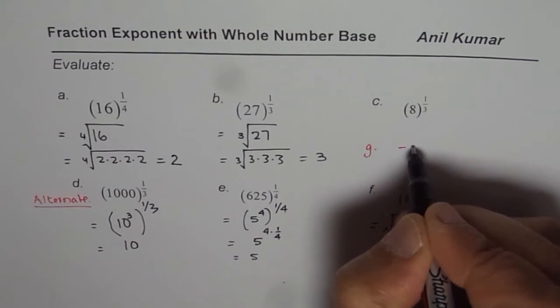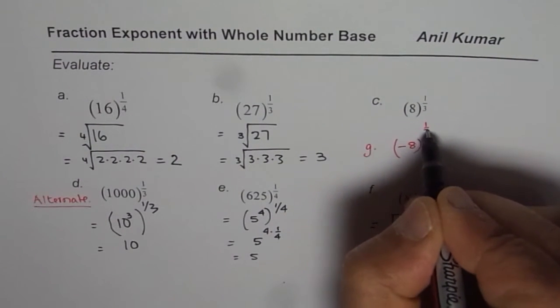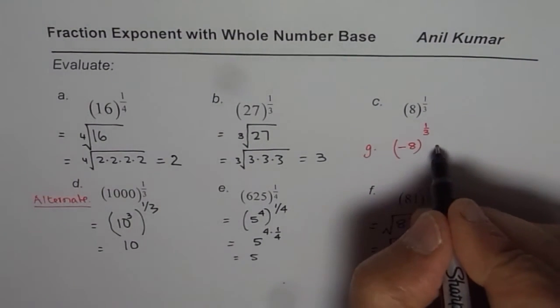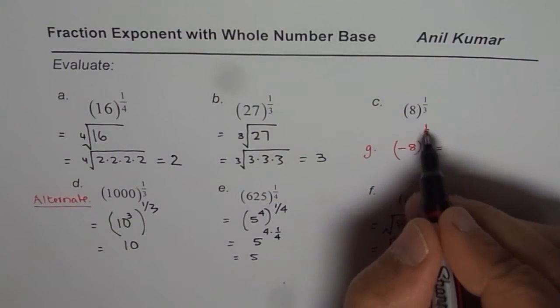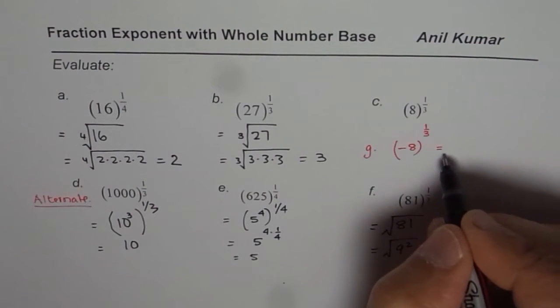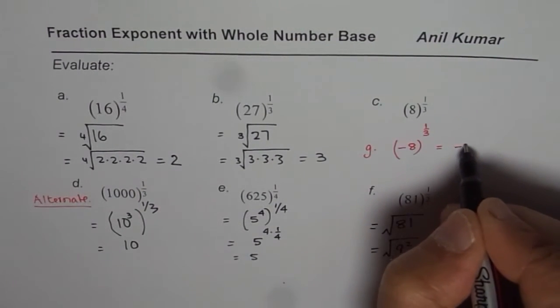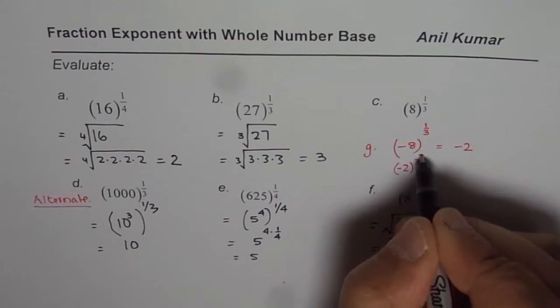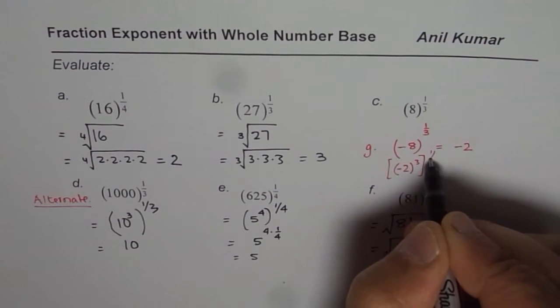If I have minus 8 to the power of 1 over 3, what is the solution? This is what, let us take this one also. Minus 8 to the power of 1 over 3, as you can see, the answer is minus 2. You know, we could write this as minus 2 cubed and everything to the power of 1 over 3.